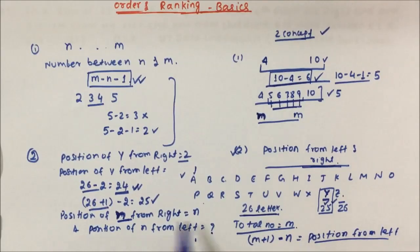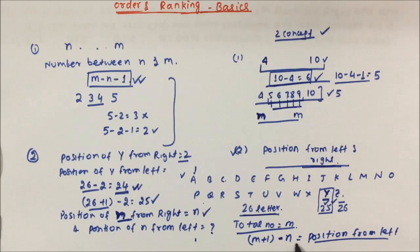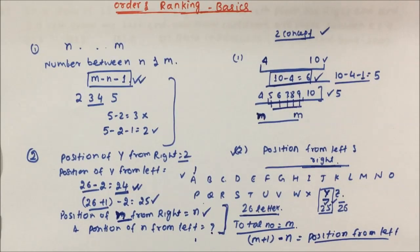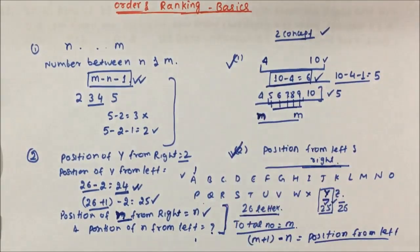This is vice versa. If the position from left is given equal to N and then position from right you have to calculate, then it will be M plus 1 minus N — the formula is the same concept. I request you not to remember the formula; instead try to understand these two important concepts so that if you forget the formula in the exam, you will be able to find it out by yourself.